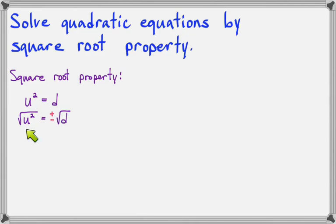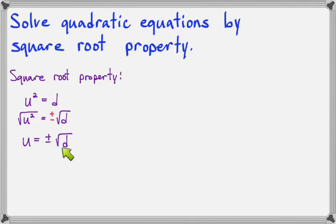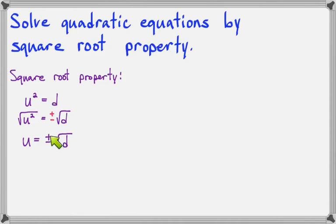Now we can simplify the left side. The square root of u squared just gives us u. So we end up with u equals either the positive or the negative square root of d. That makes sense: if u squared equals d, then u equals the square root of d, but it could be positive or it could be negative.